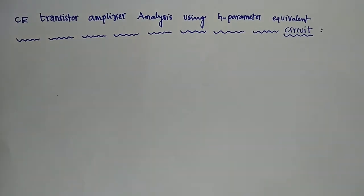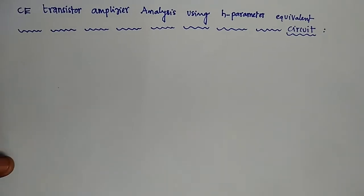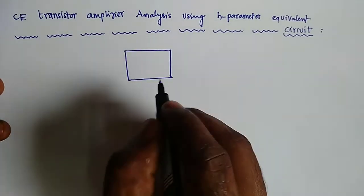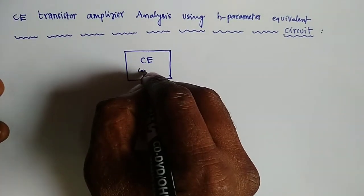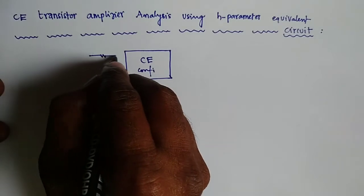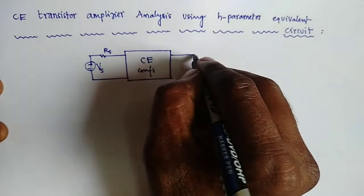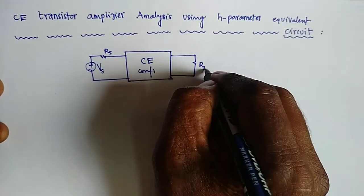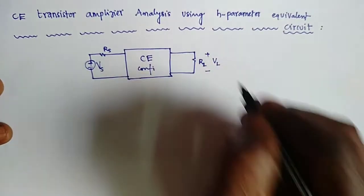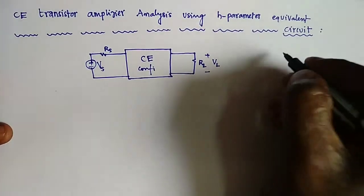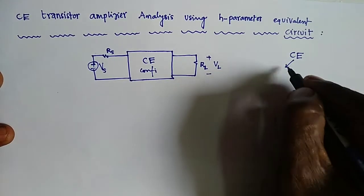We are going to start the concept of CE transistor amplifier analysis using H parameter equivalent circuit. The common emitter amplifier basic block diagram has VS and RS at the input. At the end of the configuration we use a load resistance, and the voltage drop across it is VL or V0. In this circuit we use CE common emitter configuration.